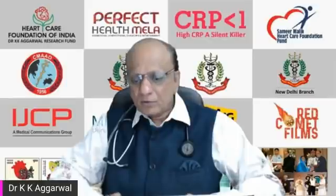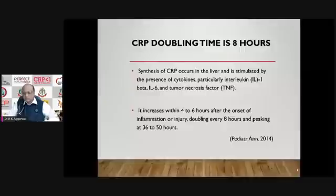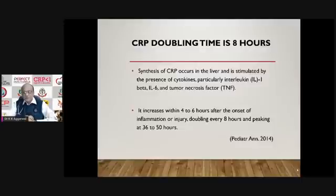The synthesis of CRP occurs in the liver and is stimulated by the presence of IL-6 and tumor necrosis factor. It increases within 4 to 6 hours after the onset of inflammation or injury, doubles every 8 hours, and peaks at 36 to 50 hours.